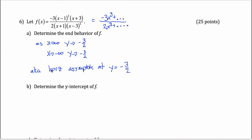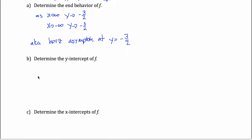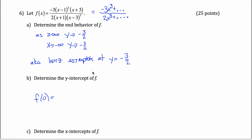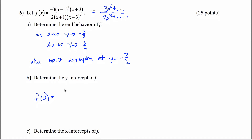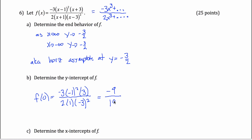Either form completely describes the end behavior. For the y-intercept, it's the output when x equals 0, so change all the x's into 0's: negative 3 times negative 1 squared times 3, divided by 2 times 1 times negative 3 squared. On top, that gives negative 3 times 1 times 3 equals negative 9; on the bottom, 9 times 1 times 2 equals 18. So the y-intercept is negative 1 half.